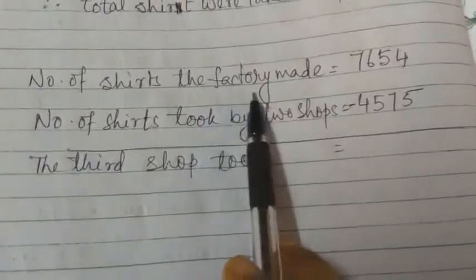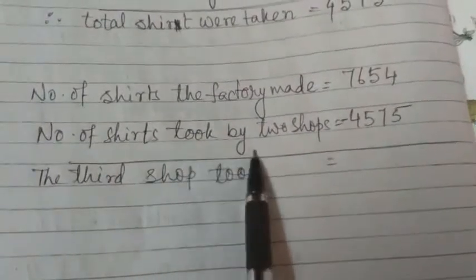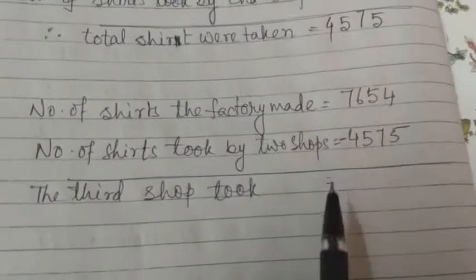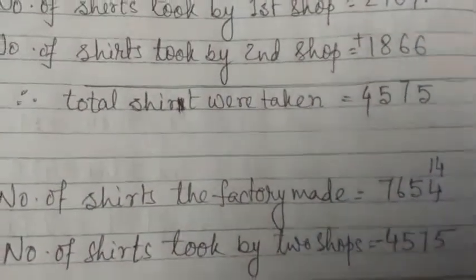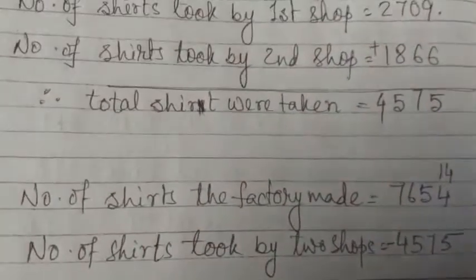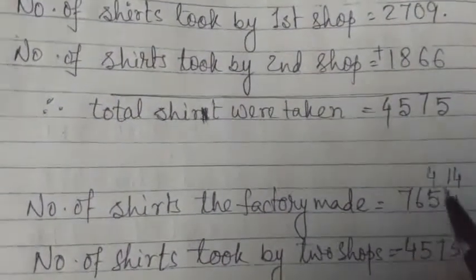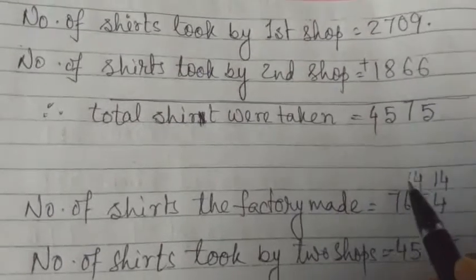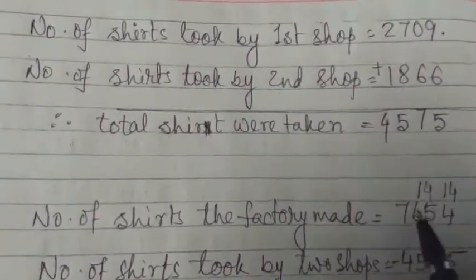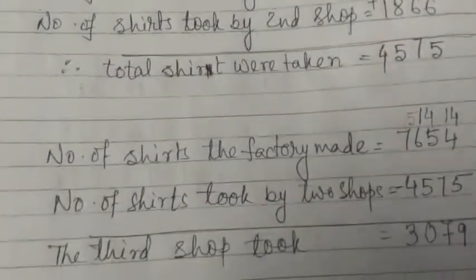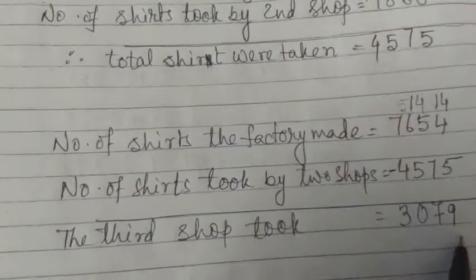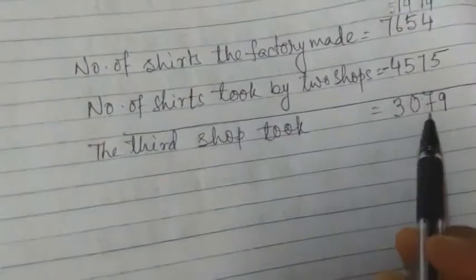Number of shirts the factory made is 7,654. Number of shirts taken by 2 shops is 4,575. Now we have to do subtraction. 4 minus 5 — as 4 is less than 5, we borrow 1 to make it 14. Counting to 9. As we borrow 1, 5 becomes 4. 4 minus 7 — borrow 1 from the hundreds place to make it 14. 14 minus 7 is 7. As we borrow 1, this becomes 5. 5 minus 5 is 0. 7 minus 4 is 3. So the third shop took 3,079 shirts. The answer: the third shop took 3,079 shirts.